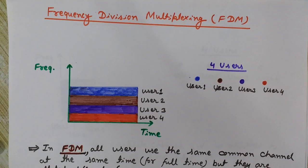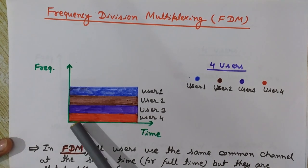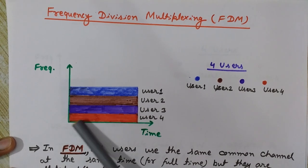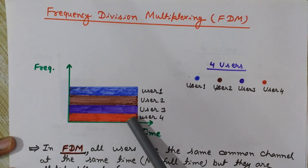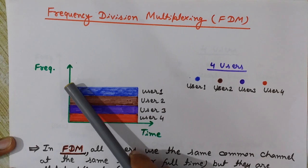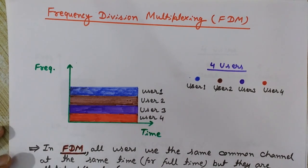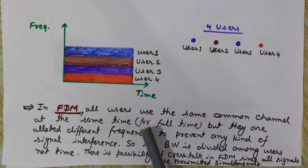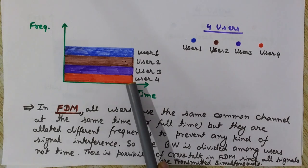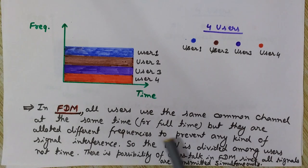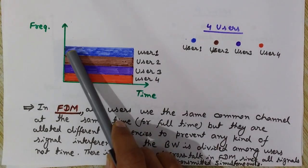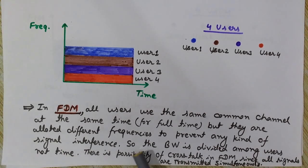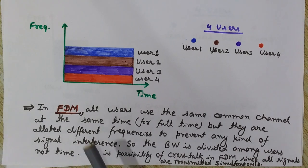Each user has its own bandwidth to use, and all users are allowed to transmit their signals for the full time duration. In FDM, all users use the same common channel at the same time, but they are allotted different frequencies to prevent signal interference. The bandwidth is divided among users — not time. Full time access is given to each user.